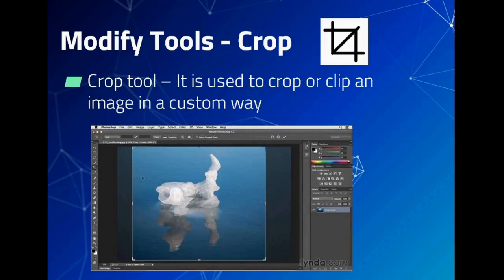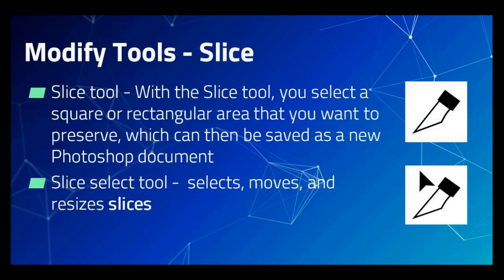Now we are going to see the Modify tools. The Crop tool is used to crop or clip an image in a customized way. The Slice tool is used to select a square or rectangular area that you want to preserve, which can then be saved as a new Photoshop document.